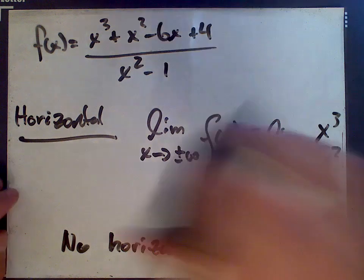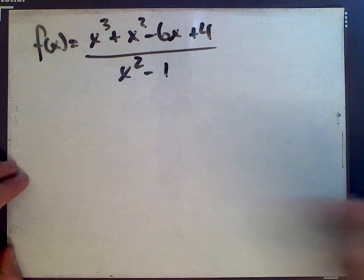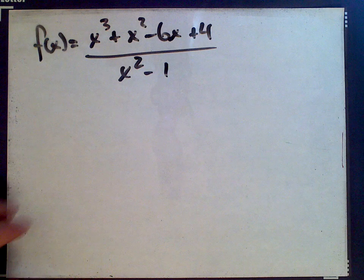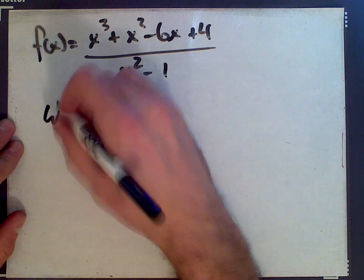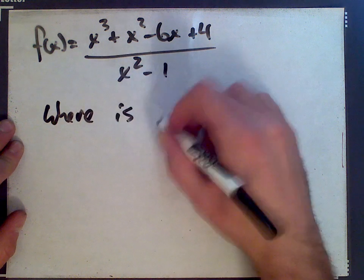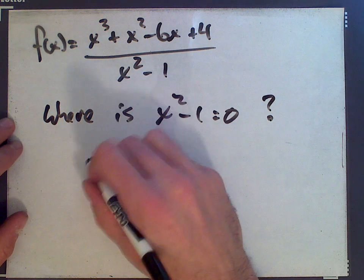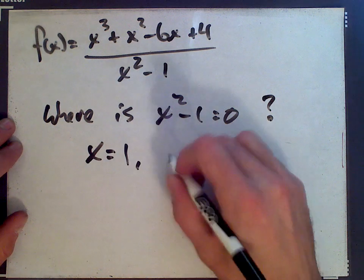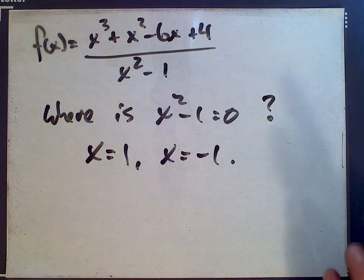What about vertical? Well, vertical asymptotes for a rational function will occur possibly, and possibly is important, where the denominator is zero. So where is x squared minus 1 equal to zero? Well, two points: x equals 1 and x equals negative 1. So these are possible asymptotes.